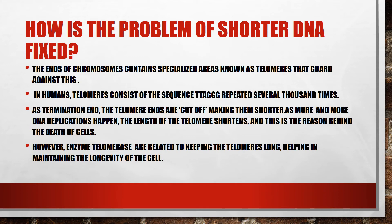As termination ends, the telomere ends are cut off, making them shorter. As more and more DNA replication happens, the length of the telomeres shortens, and this is the reason behind the death of the cell — cells cannot live longer. The solution is that the enzyme telomerase is responsible for keeping the telomeres longer, helping to maintain the long life of the cell.